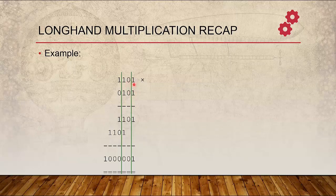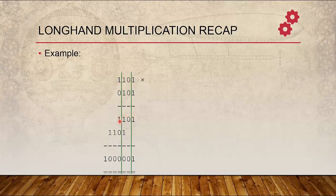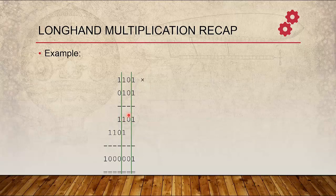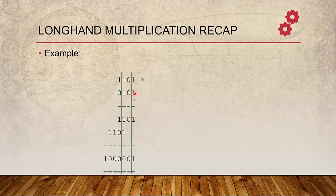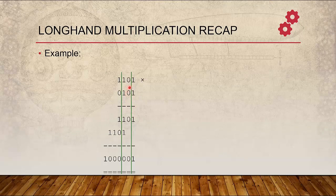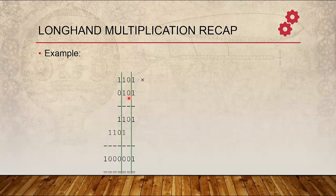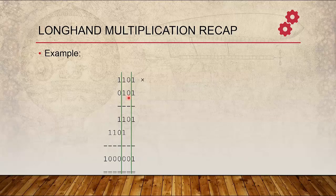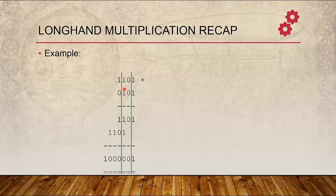So we just take the Multiplicand and add it to the partial product here, the first line. We align with the bit that we are considering. The next LSB on the left is zero, so we don't do anything.